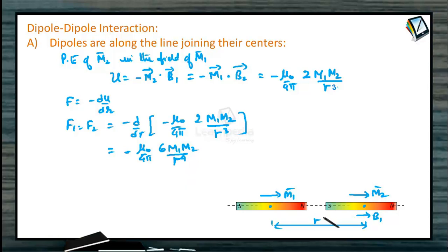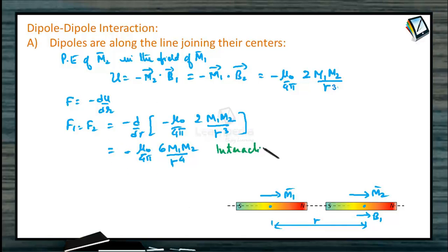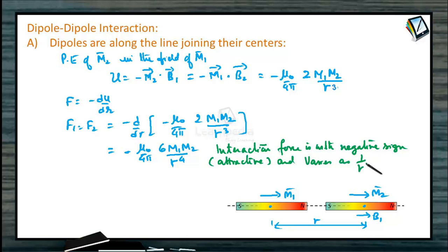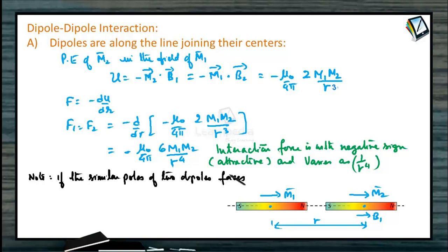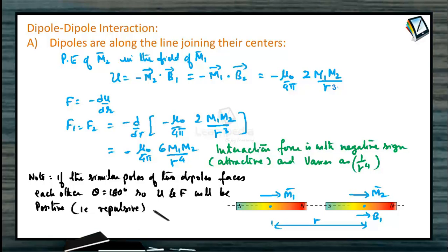If the similar poles of the bar magnets or dipoles face each other, then theta = 180 degrees. So U and hence F will be positive, that is repulsive. So if the north pole faces the north pole, there will be a repulsive force between them. The energy will also be positive. Since here the north and south poles are facing each other, the interaction force is attractive in nature.